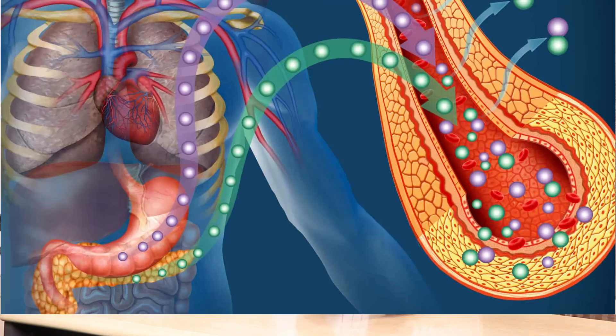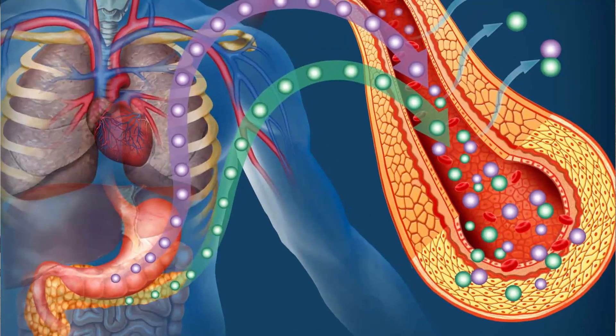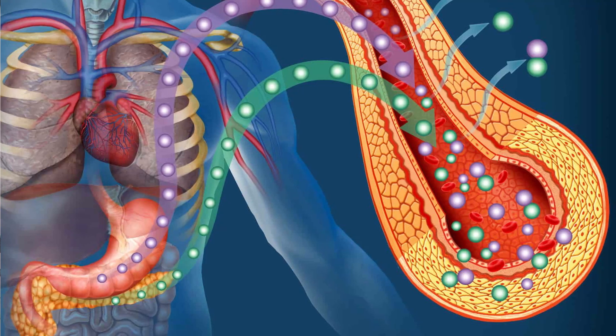What causes fatty liver? This is insulin resistance. Those who have insulin resistance form fatty liver. Who has insulin resistance? Those who are obese — with a body mass index of more than 30 — especially those with central obesity.